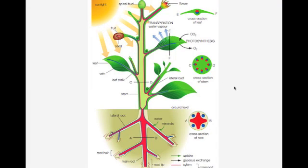In today's lesson we're going to be looking at the processes involved in the movement of substances through the xylem and phloem vessels within a plant. Up until now we've been looking at the movement of substances through animals — in particular arteries, veins, and capillaries — so now we need to have a look at the same thing in plants. We know from the Year 11 course that plants have both xylem and phloem vessels involved in the movement of substances around the plant.